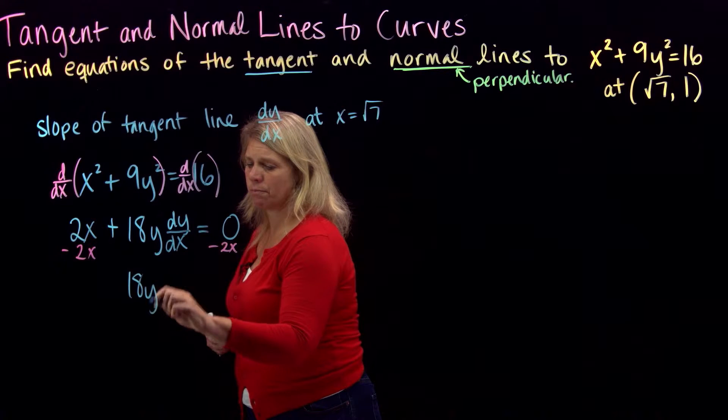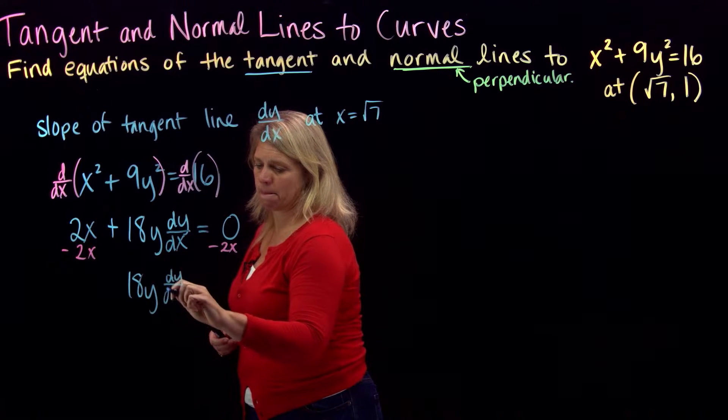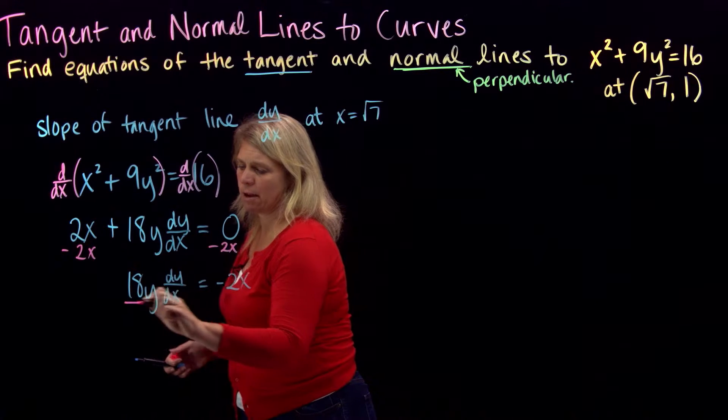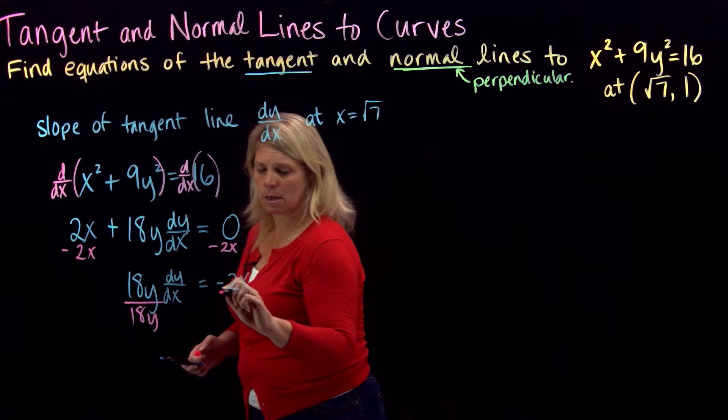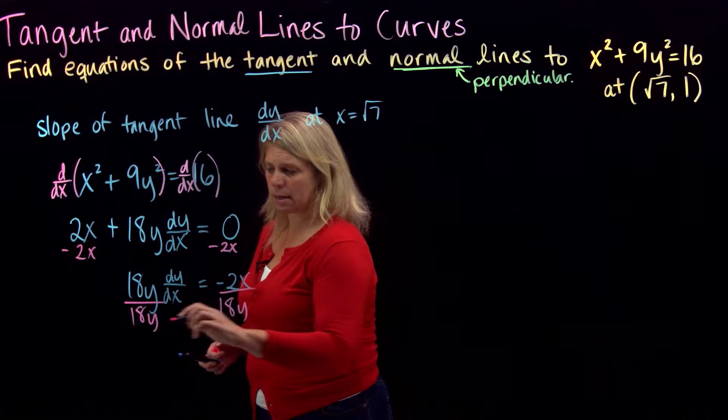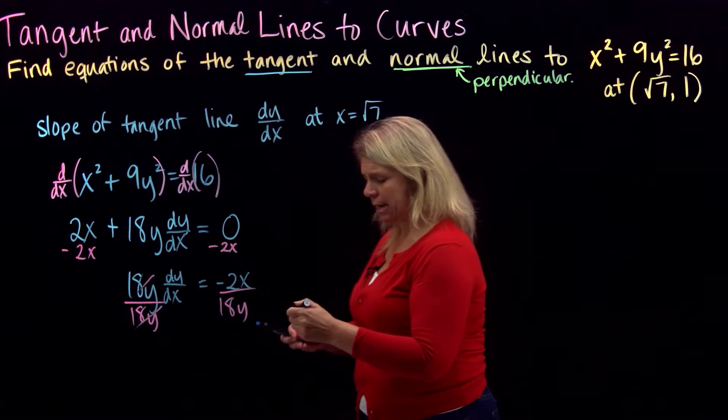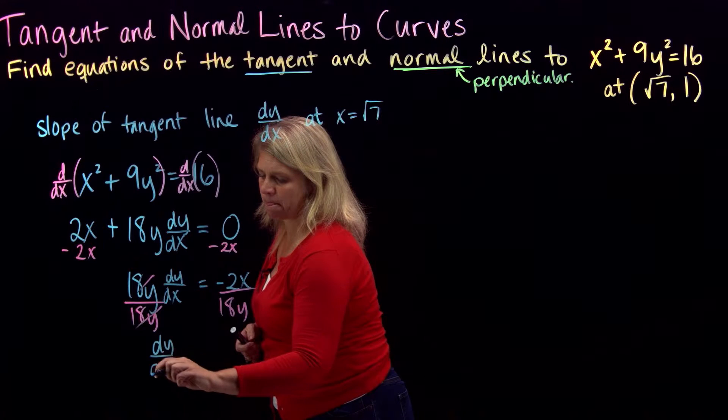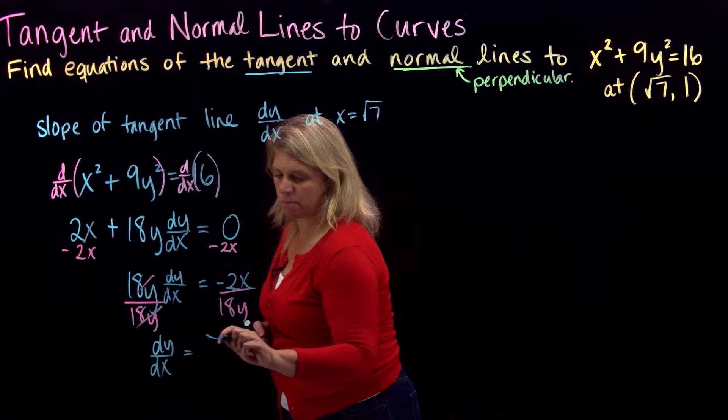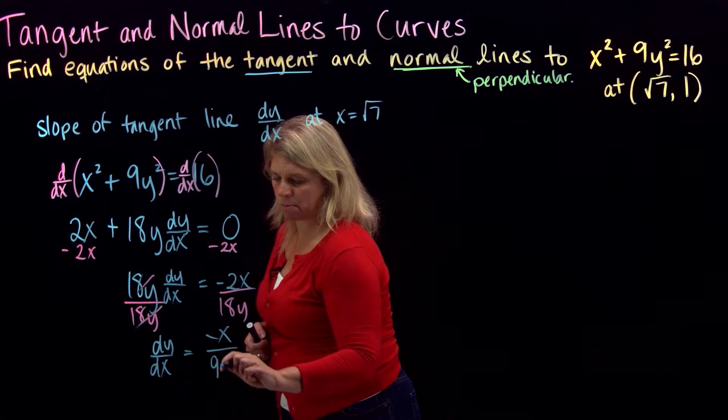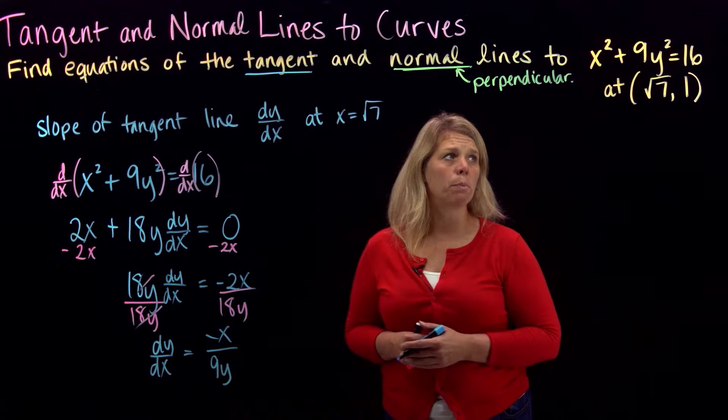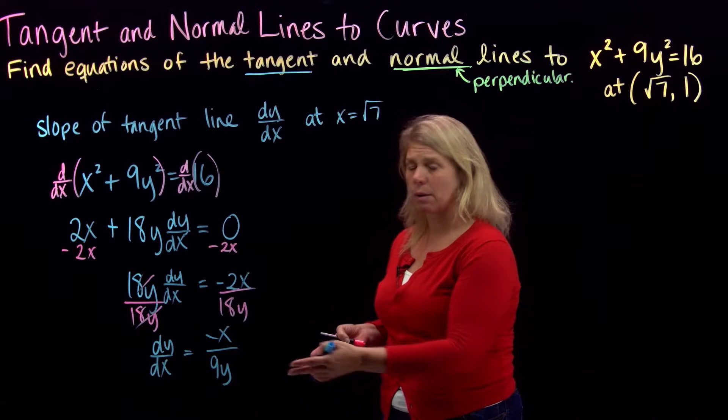I'll do that in two steps here. And then if I divide through by the 18y, so that I've solved for dy dx. I can reduce my negative 2 18ths here as well. Okay, so that is my derivative. That would give me my slope of my tangent line at the point we're interested in.